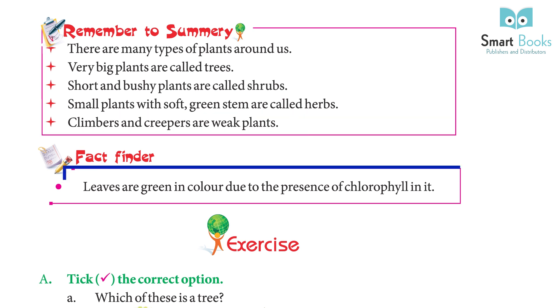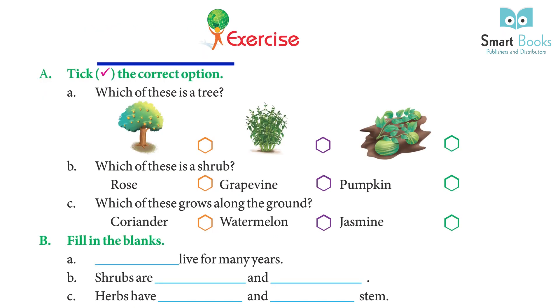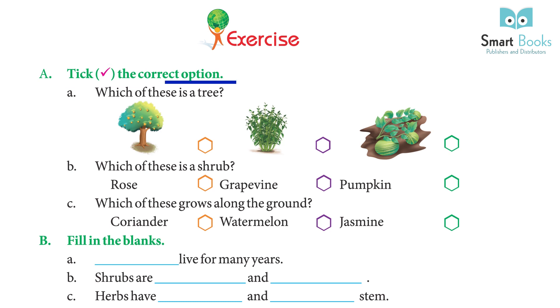Small plants with soft green stems are called herbs. Climbers and creepers are weak plants. Fact finder: leaves are green in color due to the presence of chlorophyll in them.